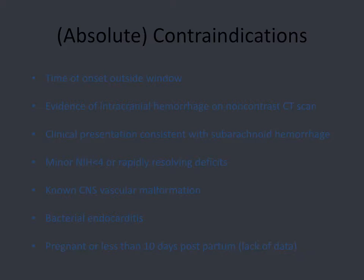The absolute contraindications to IV tPA include: being outside the treatment window — because the farther from symptom onset, the higher the risk of hemorrhagic conversion; any hemorrhage of any variety; minor symptoms such as an NIH stroke scale less than four or rapidly resolving deficits; vascular malformations in the brain; infectious emboli; and there's poor data regarding safety in pregnant and postpartum women.